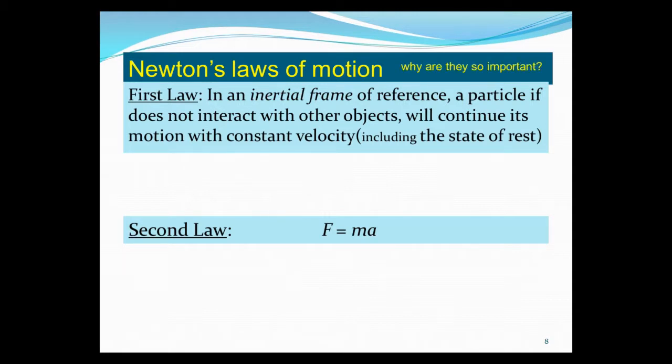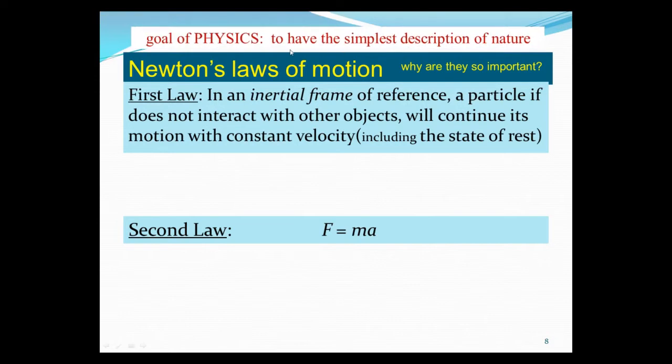Now, why are these two laws of motion so important? Well, I can answer that by remembering the goal of physics is to have the simplest description of nature. Meaning, we want to set up physics equations that can describe the widest amount of phenomena. In other words, we have the same physics equation that describes an apple falling on Newton's head, the same equation that describes the moon going around the earth, the same equation that describes the earth going around the sun. We don't need separate equations, separate laws for them. They all have the same equation. So that's an example of a simple description of nature.